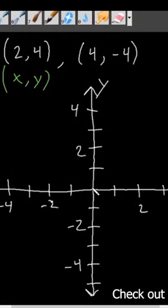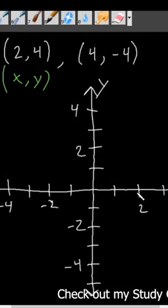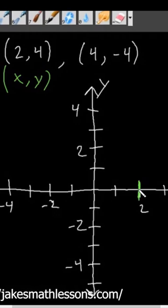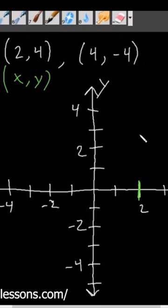Our x coordinate is positive 2, so we go over to x equals 2. We go from x=2, y=0 up to y=4, and that puts us right here.